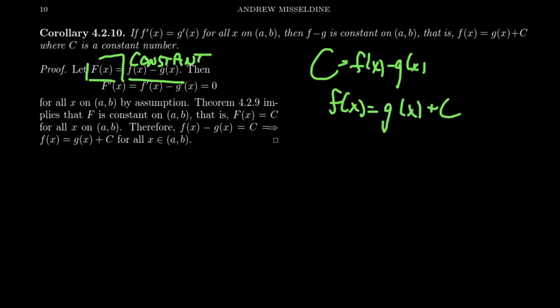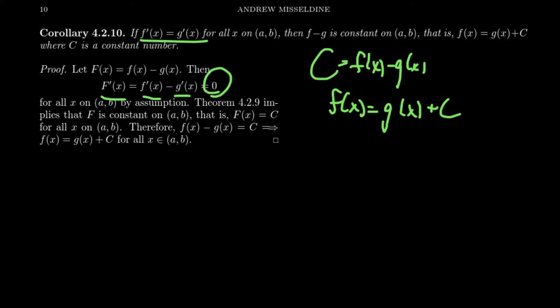The difference of the functions is going to be constant. If capital F is f minus g, then the derivative of capital F will be the derivative of f minus the derivative of g, which by assumption are equal — so the difference equals zero. Then we can invoke the previous theorem: we now have a function whose derivative is equal to zero. By the previous theorem we just proved, capital F(x) is a constant function. Therefore, since the difference between f and g is constant, f and g only differ by a constant — that is, f equals g(x) plus a constant.